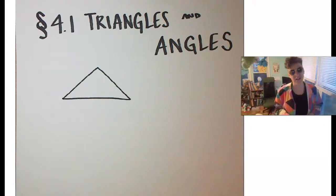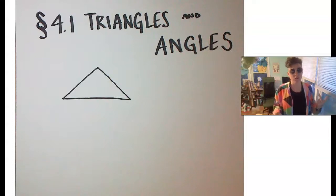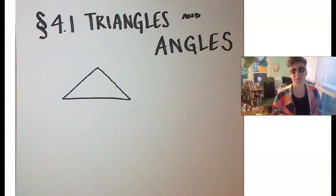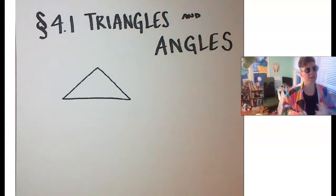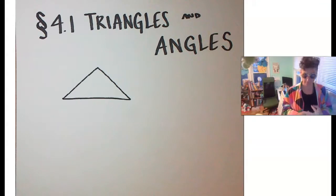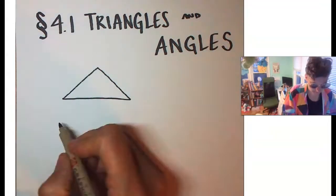We can classify triangles by their sides and their angles. So every triangle has two names — one name that talks about its sides and another name that talks about its angles. Let's talk about the names of triangles based on their sides first. We've got three options: either all of the sides are the same, two of the sides are the same, or none of the sides are the same.